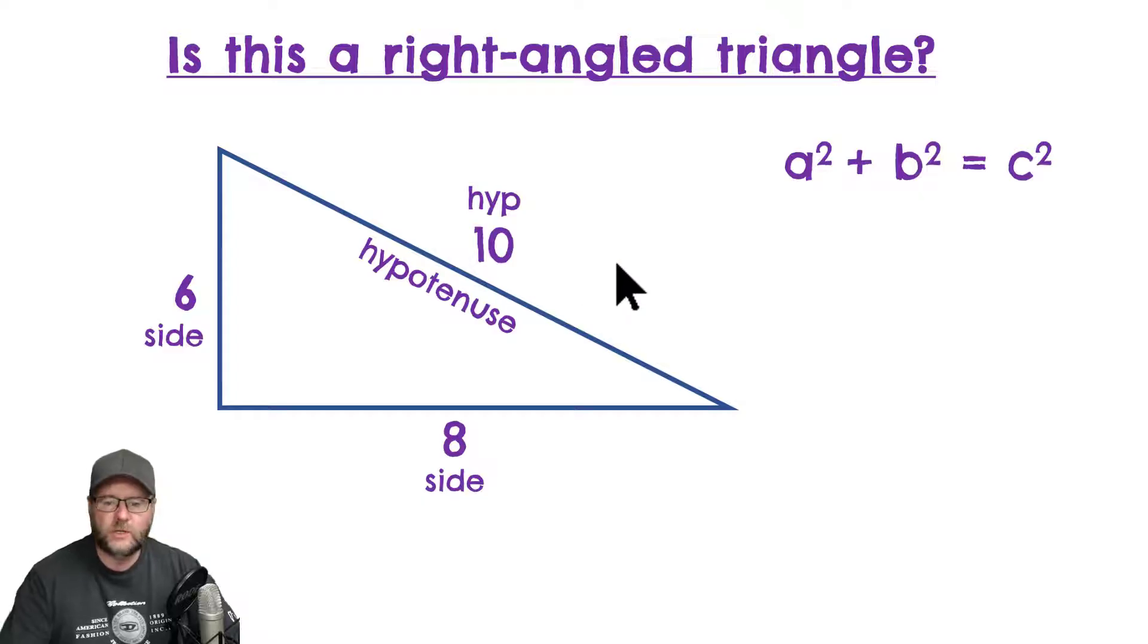Hopefully, you remember from a previous video, which I will link in the description, called the 3-4-5 triangle, this Pythagoras theorem, this very famous mathematical theorem that says, if you square the length of one side, and you add it to the square of the other side, you'll get the square of the longest side.